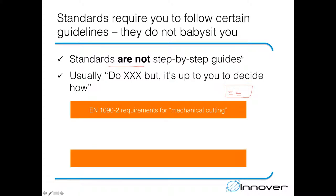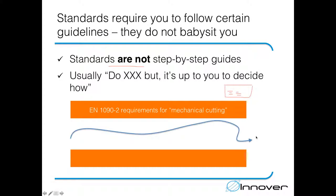To elaborate further, we can think about the EN 1092 requirements as boundaries that you cannot cross. Here I have represented the requirements for mechanical cutting from EN 1092 as orange bars. These orange bars create the boundaries for the company to perform mechanical cutting. As long as the company works within those boundaries, they are able to meet the standard's requirements.